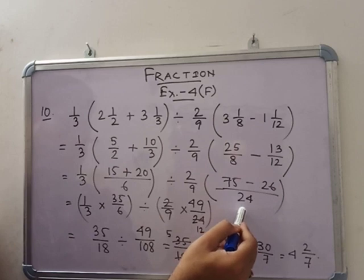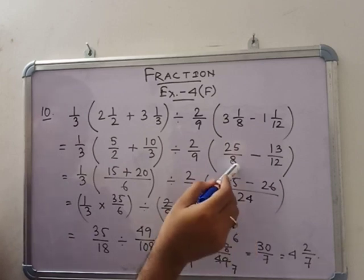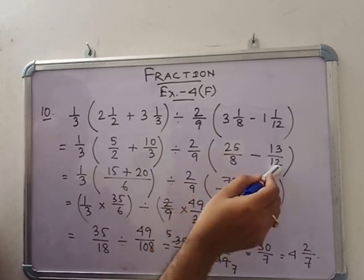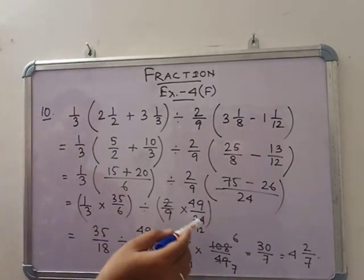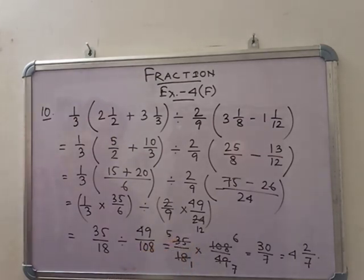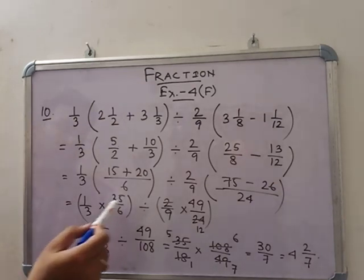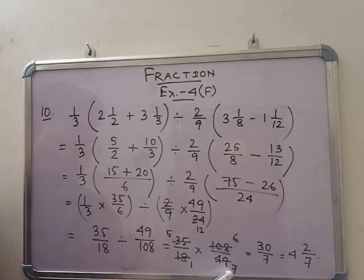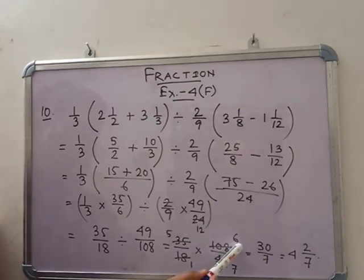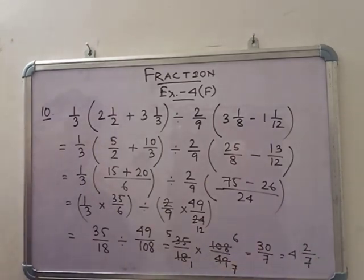LCM of 8 and 12 is 24: 24 divided by 8 is 3, 3 into 25 is 75; 24 divided by 12 is 2, 2 into 13 is 26. Subtraction: 75 minus 26 is 49. 2 and 24 cancelled — this is 12. So 49 by 12, and here 35 by 18. After changing division to multiplication and cancellation by 7: 35 by 7 is 5, and 49 by 7 is 7. Cancellation by 18: 18 gives 1 and 6. So 5 into 6 is 30, and 7 into 1 is 7. So 30 by 7 — that means 4 of 2 by 7, which is the answer.